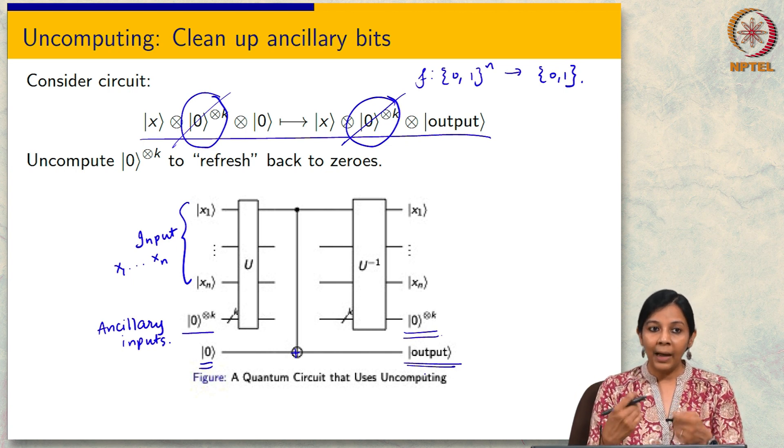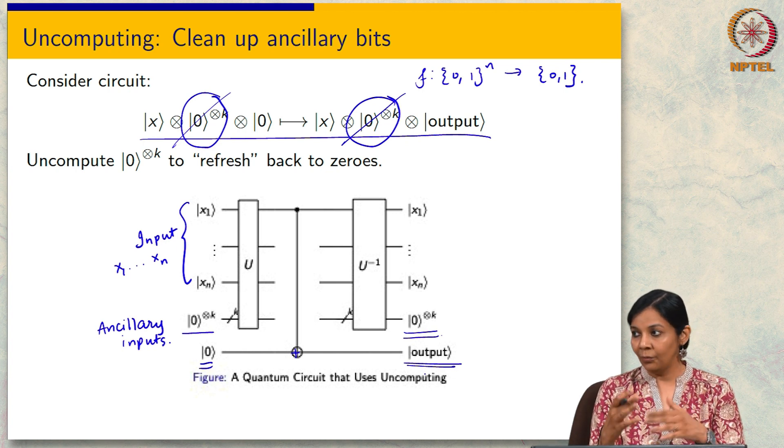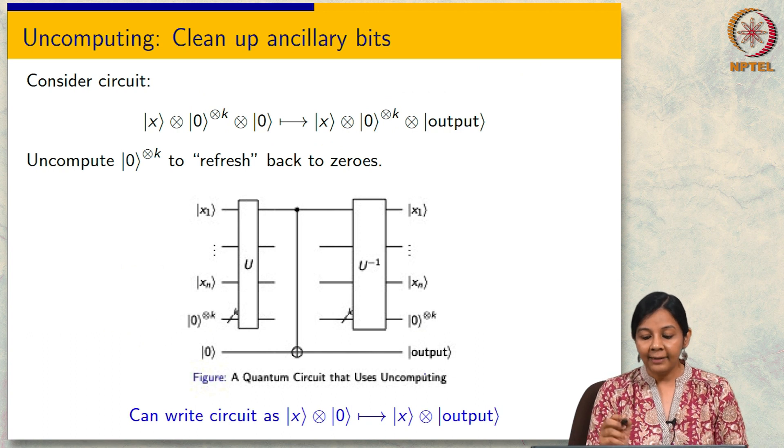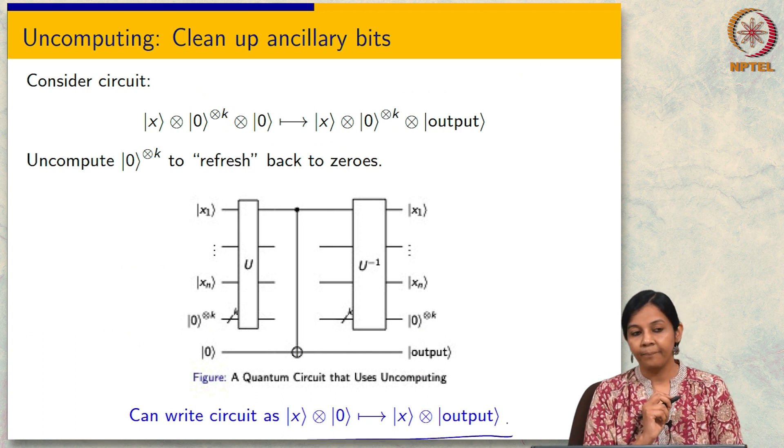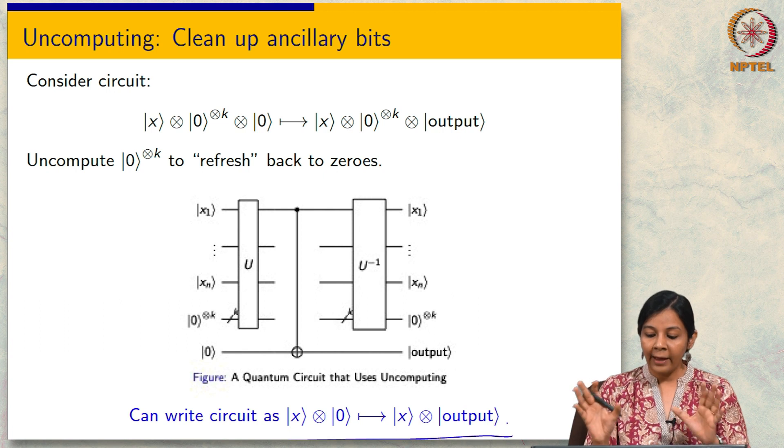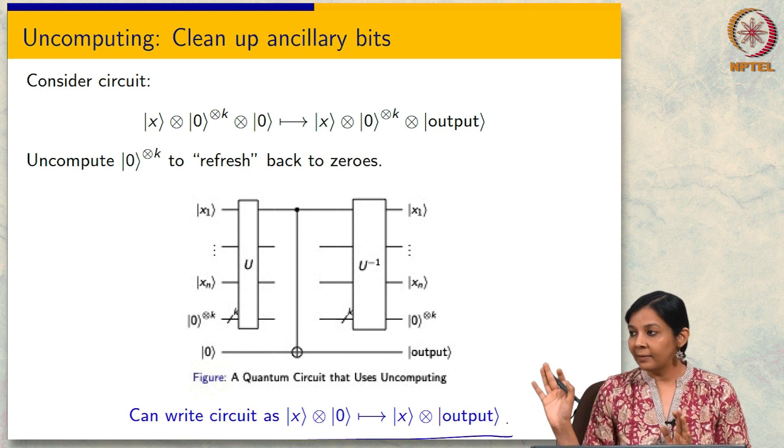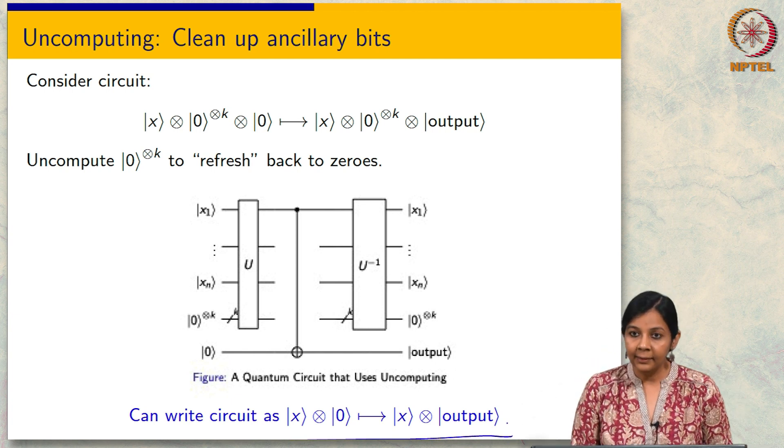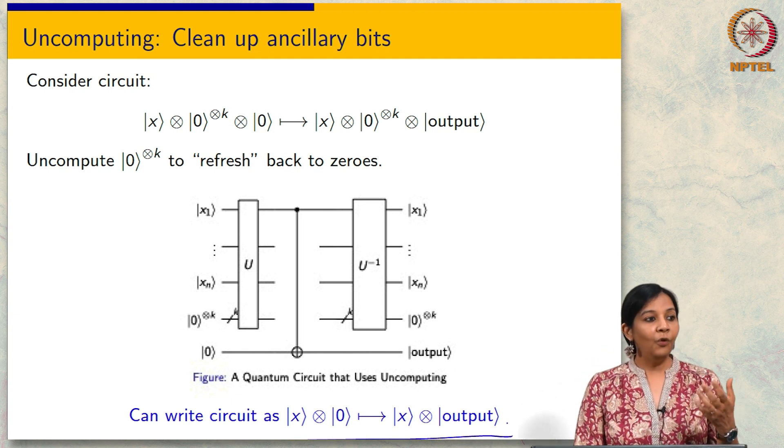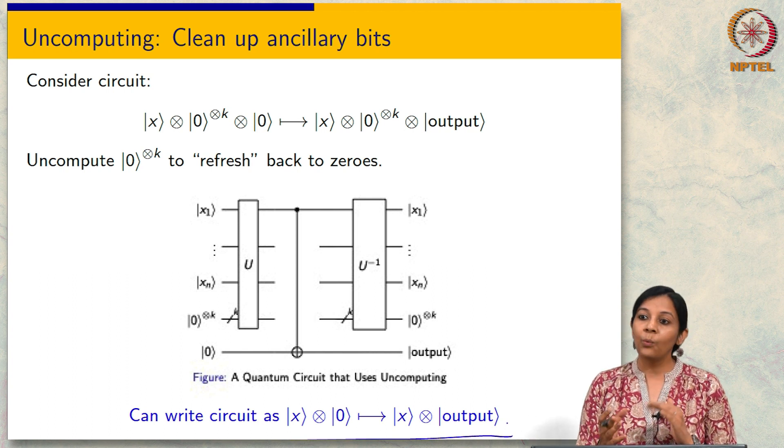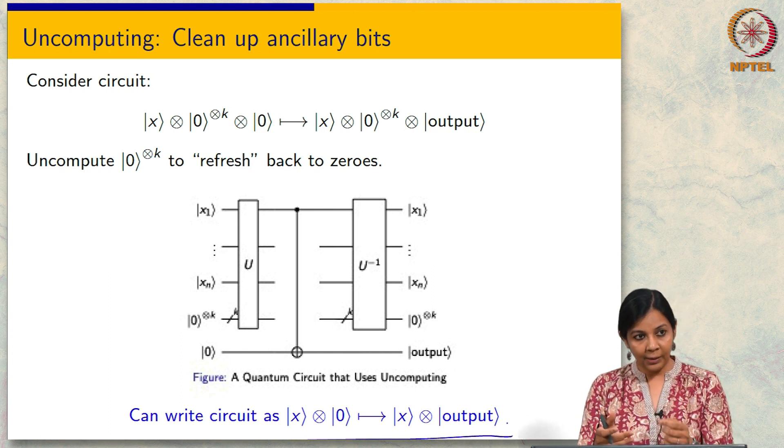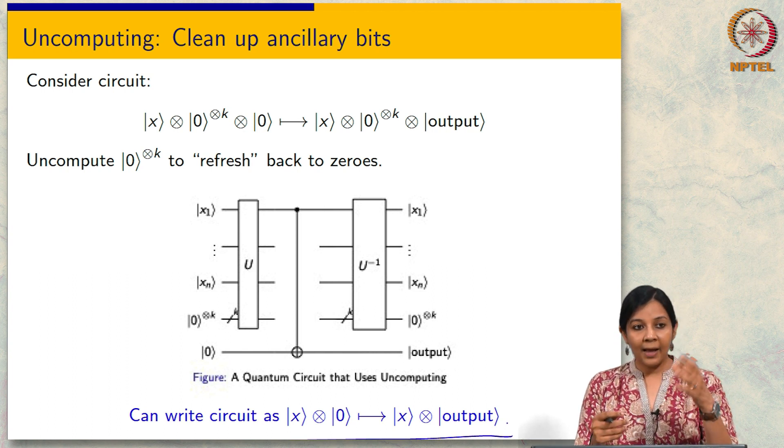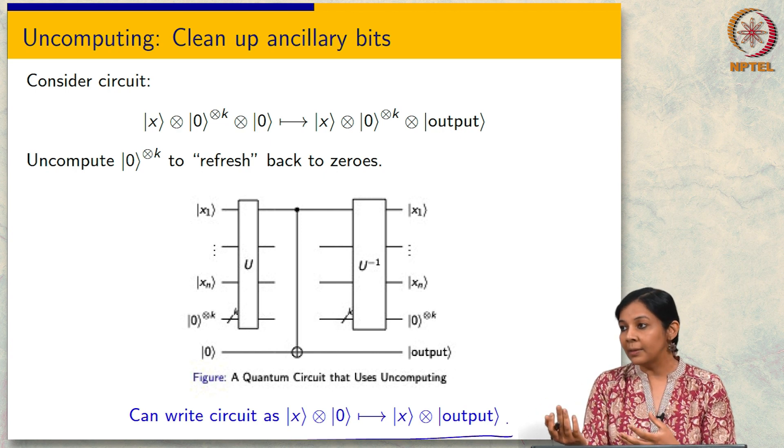You can see that here in this picture. I am not applying U inverse to kill my answer. I am just applying it to refresh my dummy things. And what this lets me do is it lets me write the circuit as this: x tensor 0 goes to x tensor output. This is a little bit of a technicality, but it is useful for us to see why we are doing this.